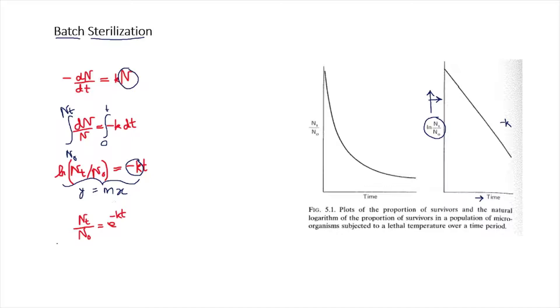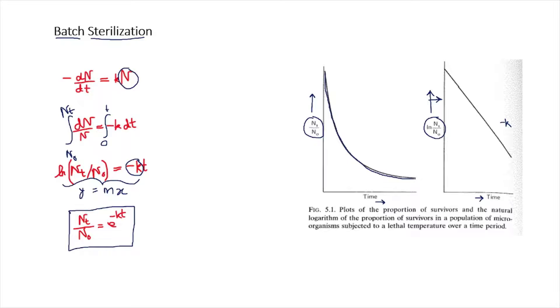We can write this as ln(Nt/N0) equals minus kt, or equivalently Nt/N0 equals e to the power of minus kt. So the death of microorganisms can also be written in exponential form. If we plot Nt/N0 on the y-axis and time on the x-axis, this represents an exponential decaying curve, because with increasing time more microorganisms are killed and the curve gradually decays.